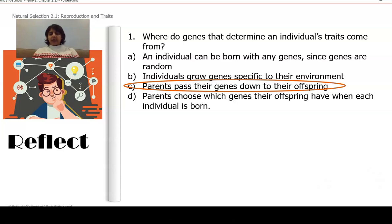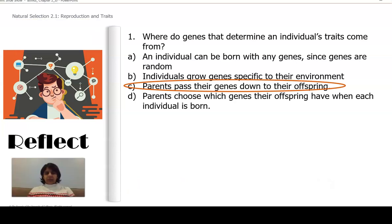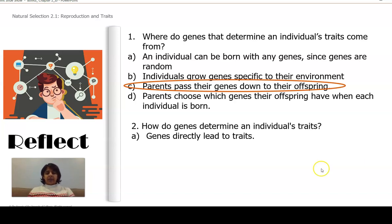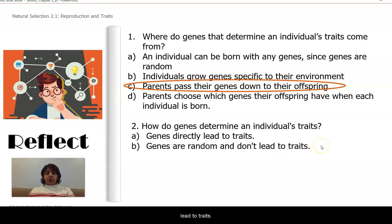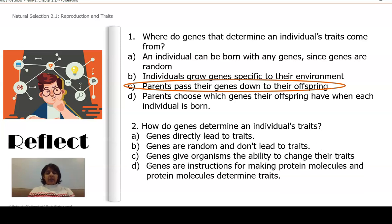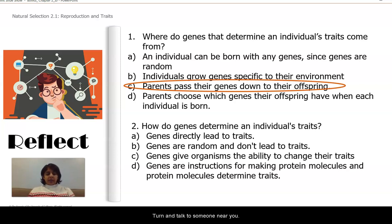Here's another question: How do genes determine an individual's traits? A: Genes directly lead to traits. B: Genes are random and don't lead to traits. C: Genes give organisms the ability to change their traits. D: Genes are instructions for making protein molecules, and protein molecules determine traits. Turn and talk to someone near you and respond with A, B, C, or D.